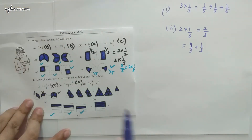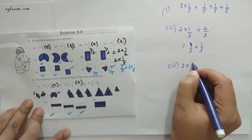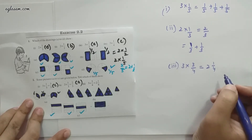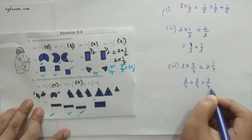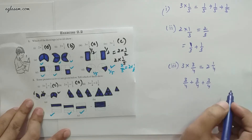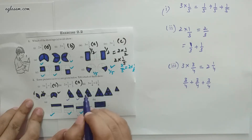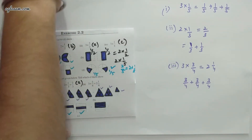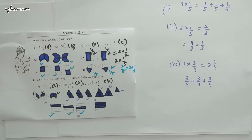For part 3: 3×(3/4), to be expressed as 2¼. That means 3/4 + 3/4 + 3/4. We have 3/4, 3/4, 3/4, and it should be disclosed as 2 into 1/4 — two complete pictures and one part. So figure b is the answer to part 3.